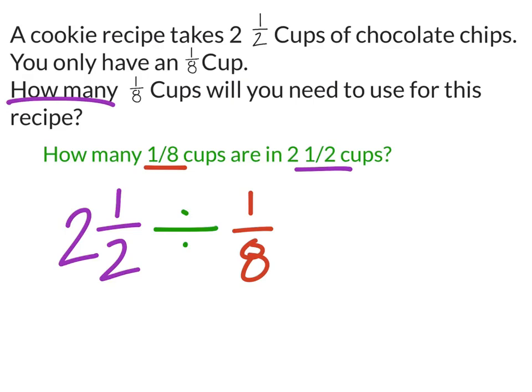Now you could have just taken one eighth and added it to itself enough times until you had two full cups and a half cup. But if we do this with the division like this, then it may end up being a little bit shorter for us.